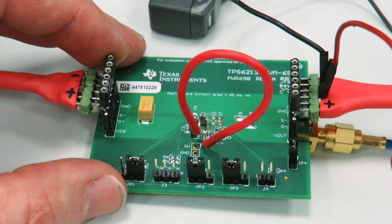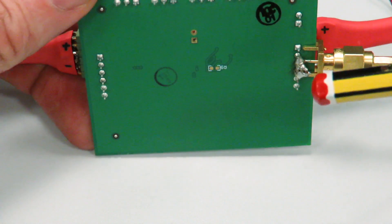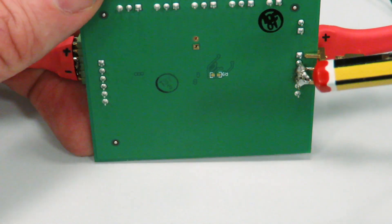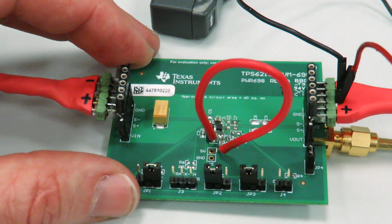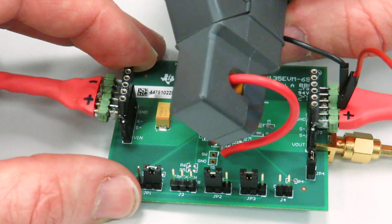Let's look at the bench and see the different operation modes. Here we have our evaluation module. We measure the output voltage across the output pins using high frequency decoupling capacitor. And we have soldered a wire in series to the inductor to measure with the current probe the inductor current.